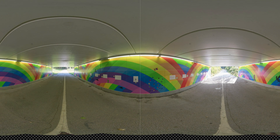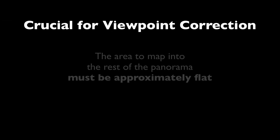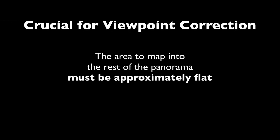The images are taken from an offset position, or as you might call it, from a different viewpoint. Viewpoint Correction now allows you to map that image back into the rest of the panorama, and to do that more or less perfectly. There is only one big condition that has to be satisfied: the area that you are trying to map back into the original panorama has to be more or less perfectly flat.